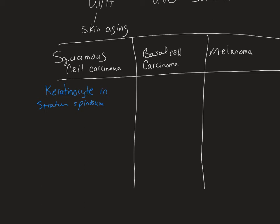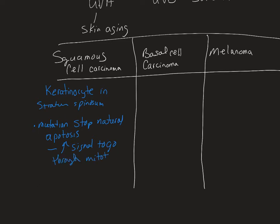The cells in stratum spinosum are thickening up their membranes and will eventually be ejecting organelles as they get up into the stratum granulosum. The mutations stop that natural apoptosis process so that they don't lose the organelles. Not only do they stop the natural apoptosis, but it increases the signals to go through mitosis. So you've got cells in the stratum spinosum potentially going through mitosis — and remember, they're only supposed to go through mitosis in the stratum basale, so that's not good.